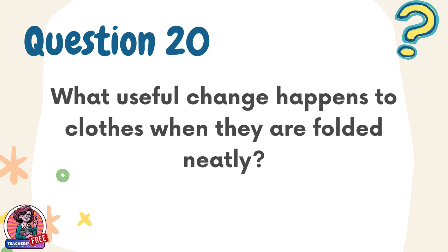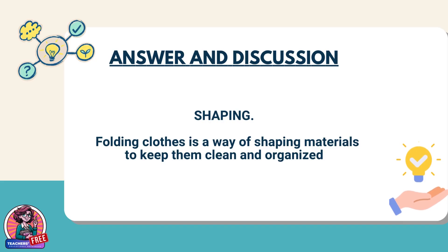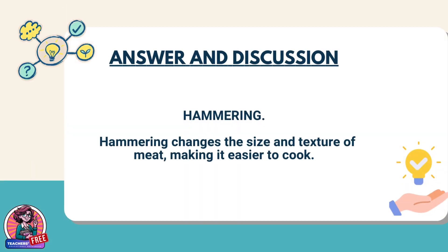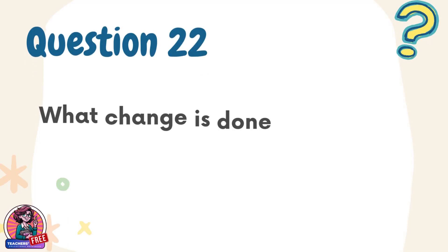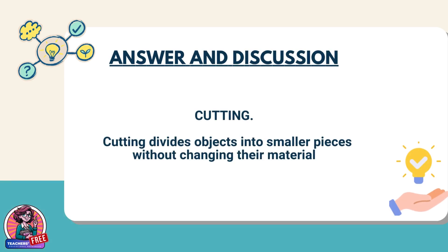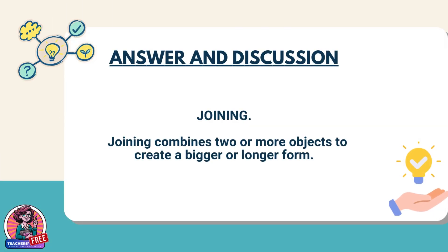Question 20. What useful change happens to clothes when they are folded neatly? Answer: Shaping. Folding clothes is a way of shaping materials to keep them clean and organized. Question 21. What change occurs when meat is pounded with a wooden mallet? Answer: Hammering. Hammering changes the size and texture of meat, making it easier to cook. Question 22. What change is done when paper is cut into shapes for fiesta decorations? Answer: Cutting. Cutting divides objects into smaller pieces without changing their material. Question 23. What change is made when popsicle sticks are glued together to form a craft? Answer: Joining. Joining combines two or more objects to create a bigger or longer form.